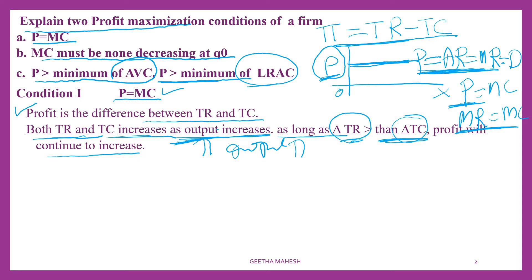The change in total revenue by producing an additional unit of output is going to increase, but will also incur additional cost. If the total cost incurred to produce an additional unit is 3 rupees, and by selling that additional unit the firm is able to earn total revenue of 4 rupees, then as long as total revenue is greater than total cost, the firm is going to earn profit and will continue to earn profit.